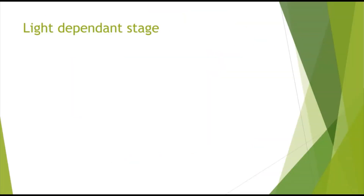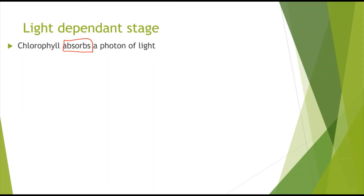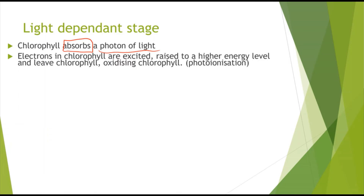Now I'll summarise the light-dependent stage of photosynthesis. First, chlorophyll absorbs a photon of light — 'absorbs' is a keyword that gets you a mark. The electrons in the chlorophyll are excited — another keyword — raised to a higher energy level, and they leave the chlorophyll, which oxidises it. This is photoionisation.